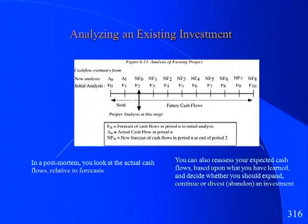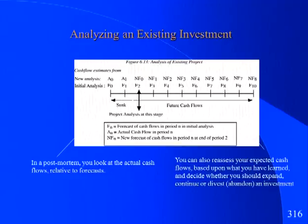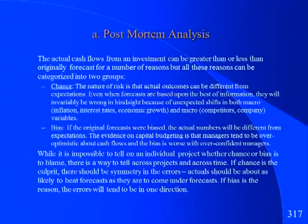Let's start with the process. There was your initial investment; now you're two years into the project. You've got two years of actual numbers. Those actual numbers might be greater than your expected numbers — in which case you're happy — or much lower than expected, in which case you're worried. So there you are, trying to decide what to do next. Let's look at the four choices you will have.